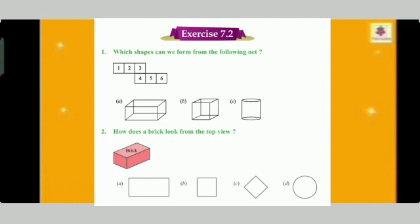And students, now we'll do question number 2 of exercise 7.2. How does a brick look from the top view? Here, options are given rectangular, square, kite-shaped or circular. Look carefully. Students from top view, brick appear to be rectangular in shape. So, the correct answer is option A. So, let's stick it.